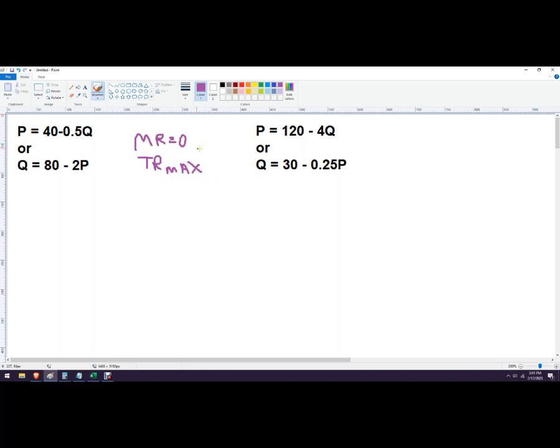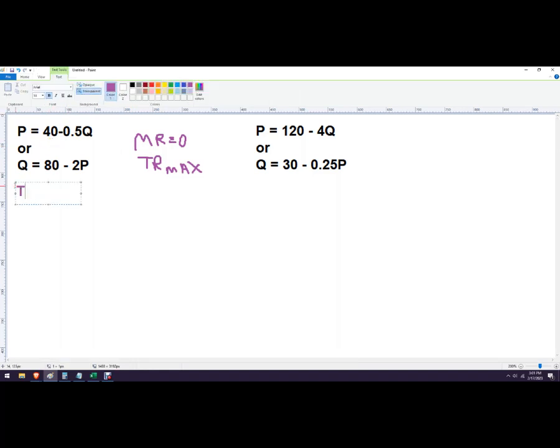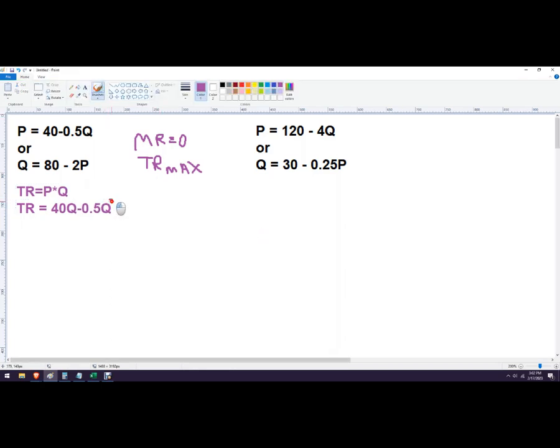So let's get marginal revenue is zero, find the quantity, and then we'll plug that into our total revenue function, see what happens, and we'll change it slightly and see if we're still making the most total revenue. So I've got this one right here. And when I want to get total revenue, I need to multiply price times quantity. So in that case, total revenue, I'm just going to take that top function right there. It would be 40Q minus 0.5Q, and I'm just going to cheat right here, squared right there. So this is the total revenue function.